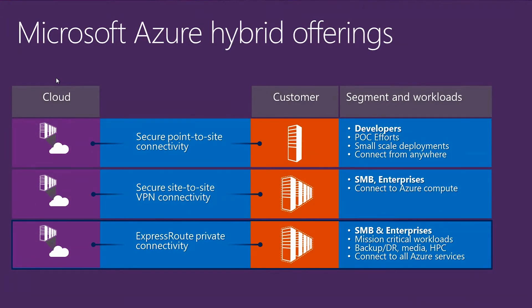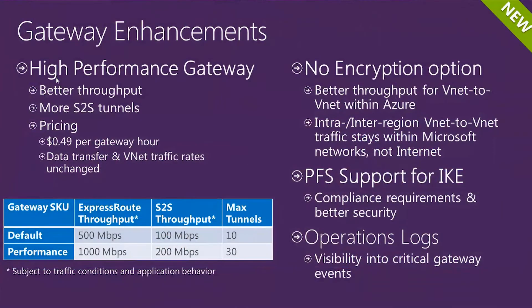Then we look at ExpressRoute private connectivity. There are two different ways to leverage that — one is going through a specific provider or their data center where they have large connections, or leveraging an MPLS circuit you may already have. Microsoft has enhanced the gateway for site-to-site tunnels quite a bit, especially since the Barcelona TechEd announcements. We get better throughput — almost double the amount of the standard gateway — and also more site-to-site tunnels, three times the amount of the standard gateway.